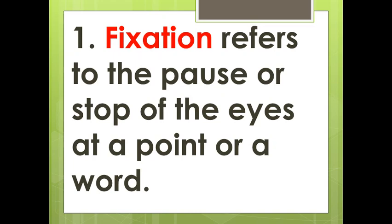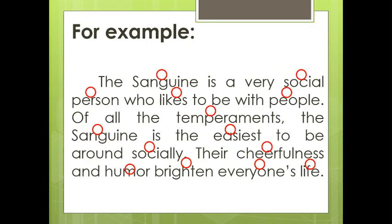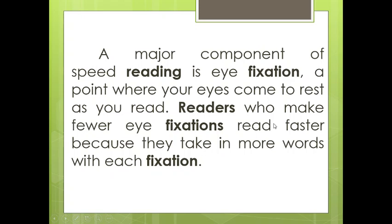First, fixation. It refers to the pause or stop of the eyes at a point or a word. For example: 'The sanguine is a very social person who likes to be with people. Of all the temperaments, the sanguine is the easiest to be around socially. Their cheerfulness and humor brighten everyone's life.' As you can observe, the circles indicate that your eyes rest on these words. A major component of speed reading is eye fixation — a point where your eyes come to rest as you read. Readers who make fewer eye fixations read faster because they take in more words with each fixation.